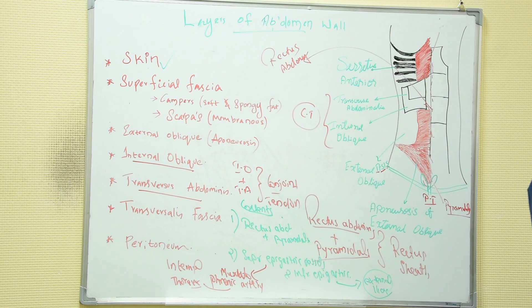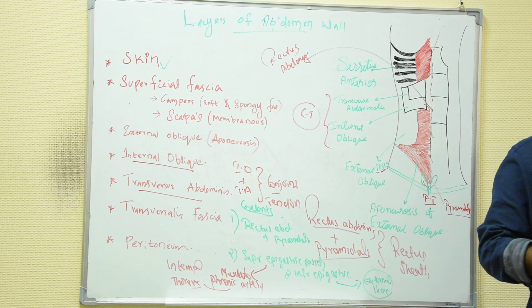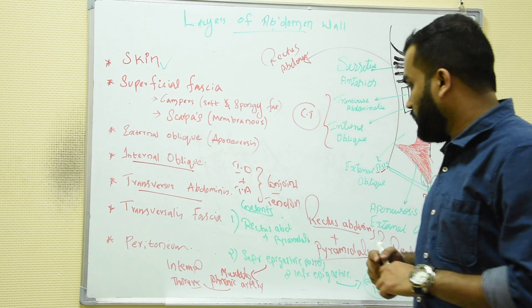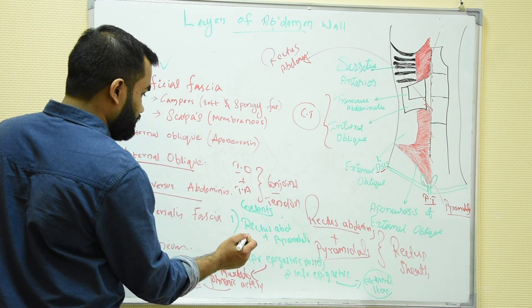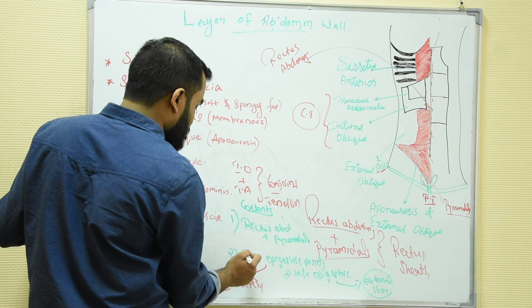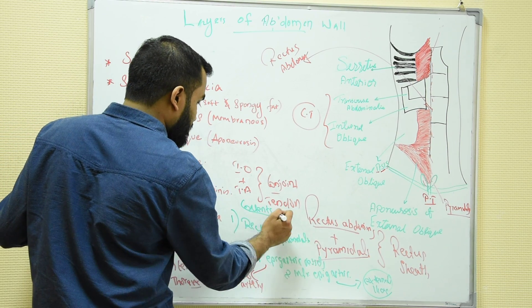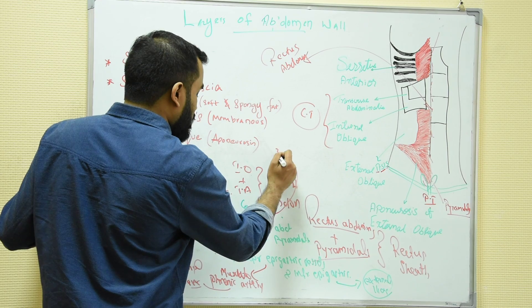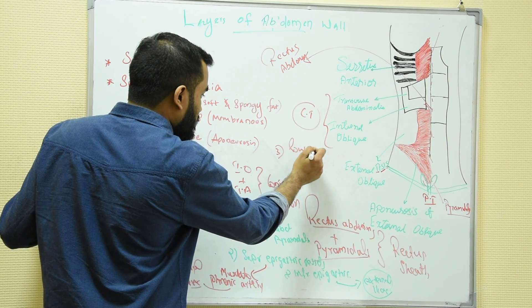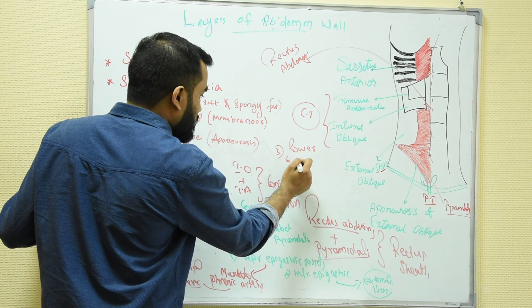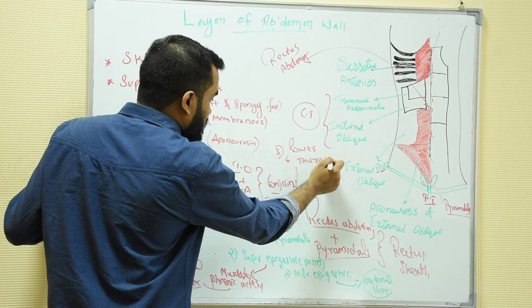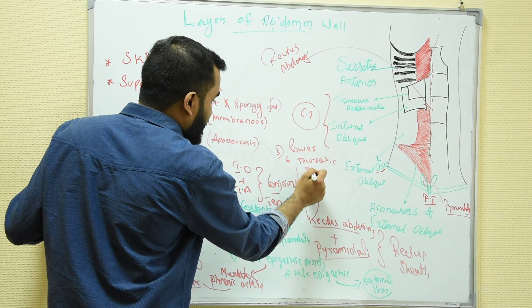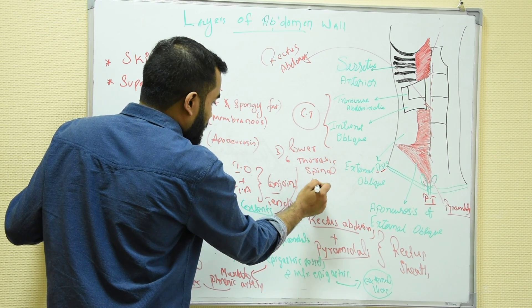Other contents of the rectus sheath include the lower six thoracic spinal nerves.